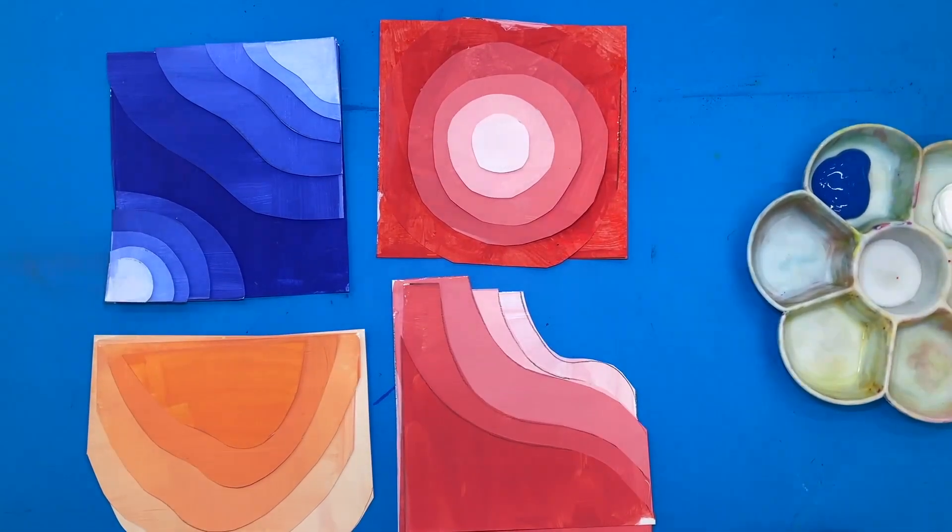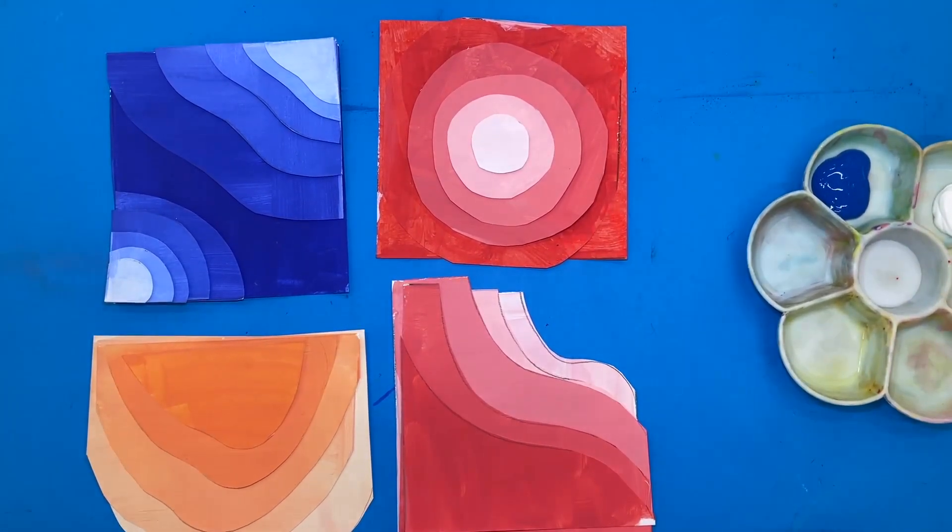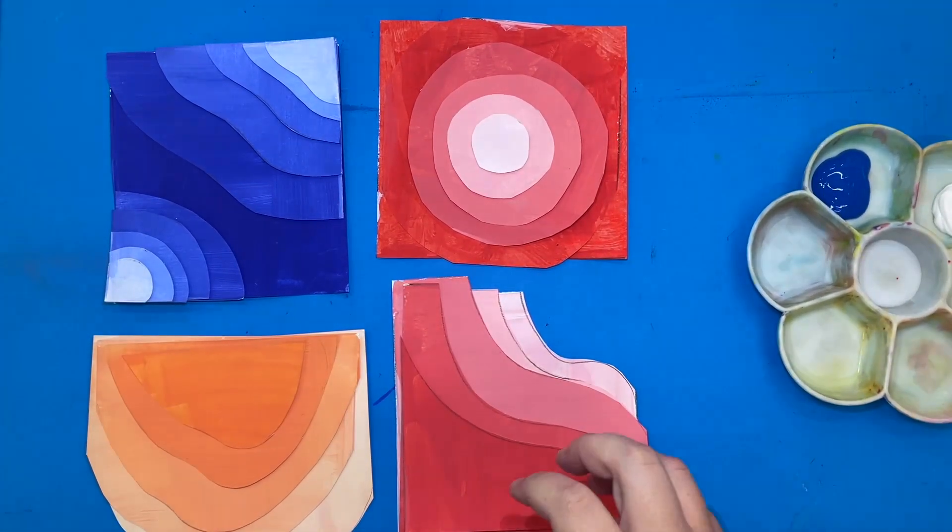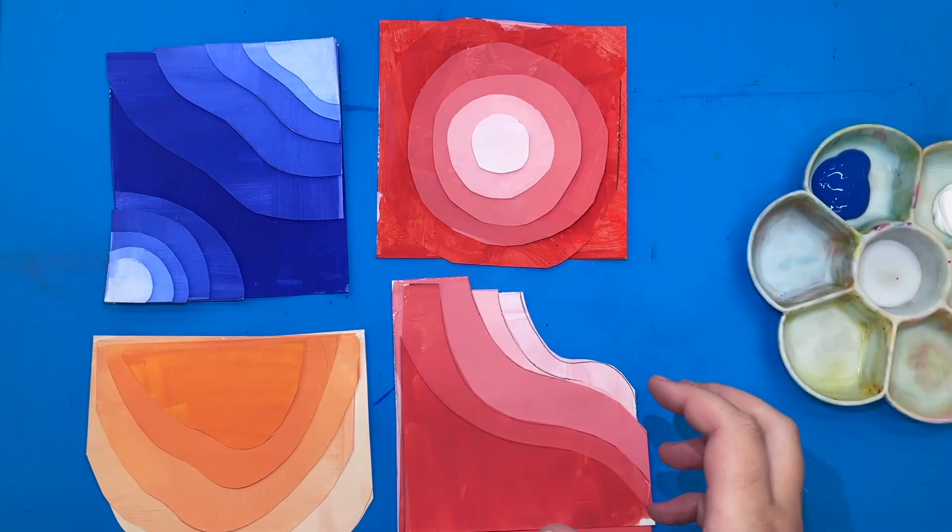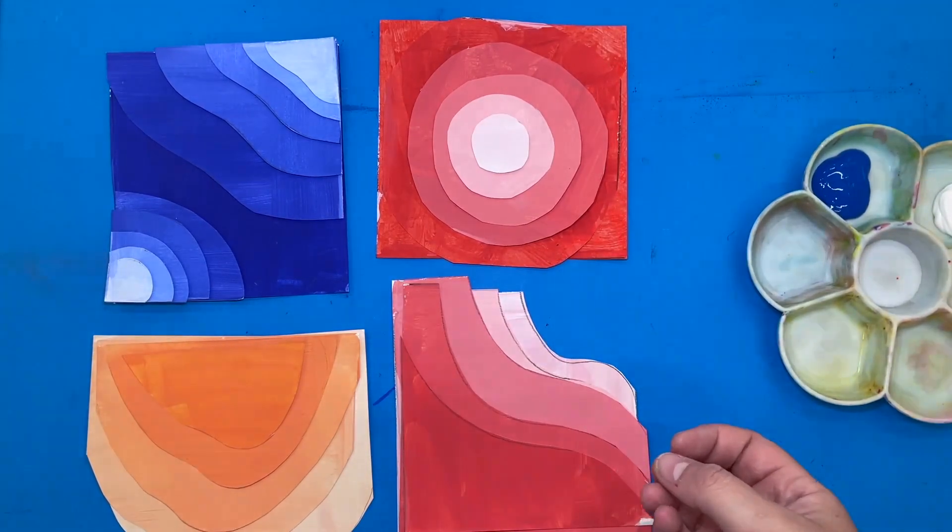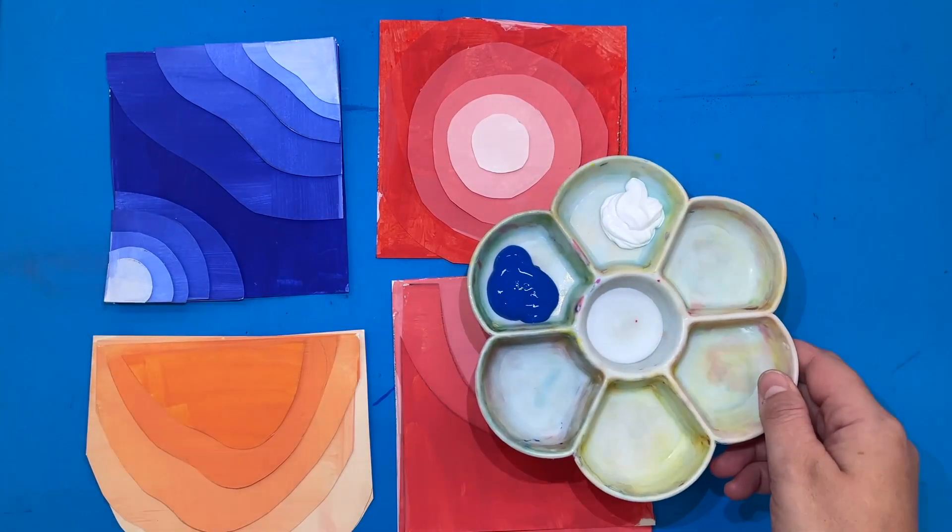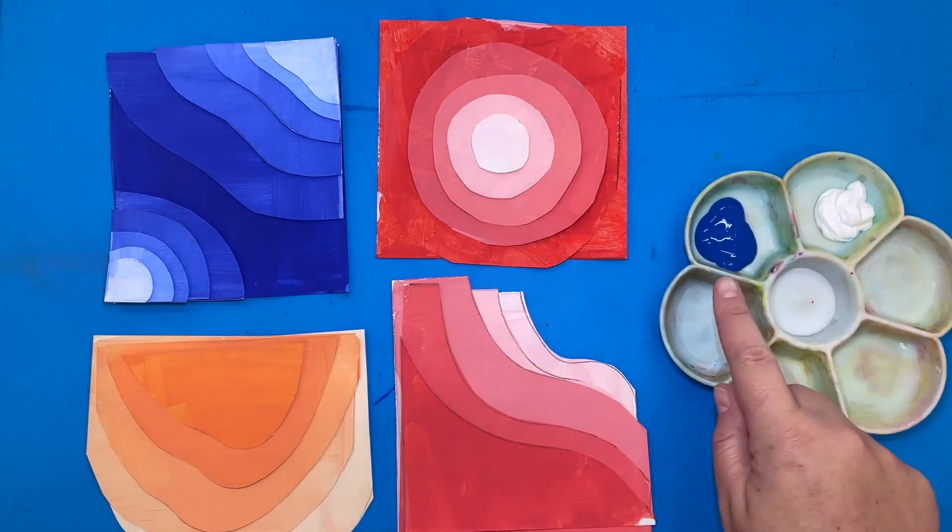Hello my amazing grade 5 students. Today we are going to start on the first part of a two-day project where we are going to explore value through paint and we are going to specifically look at creating what's called a tint, which is adding white to a hue or the original color.